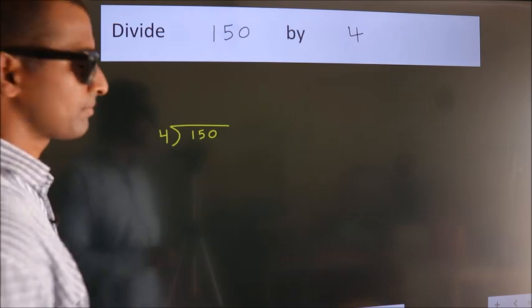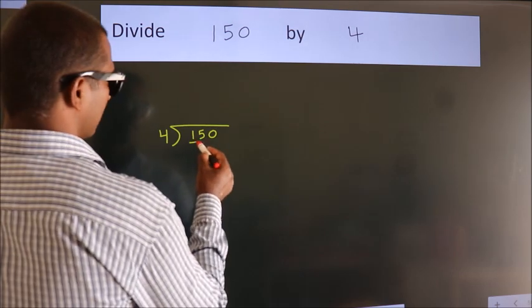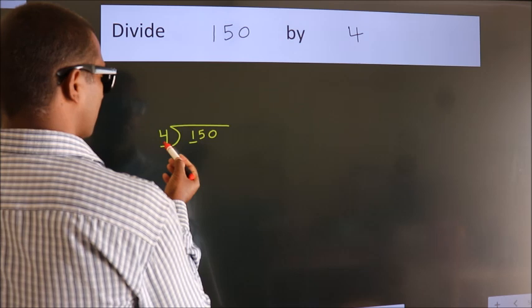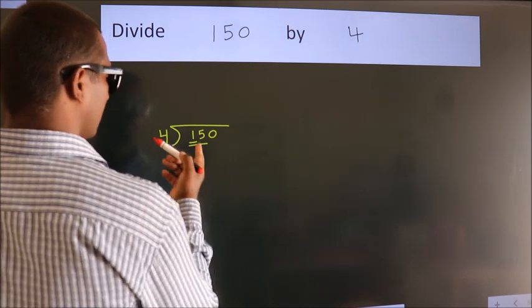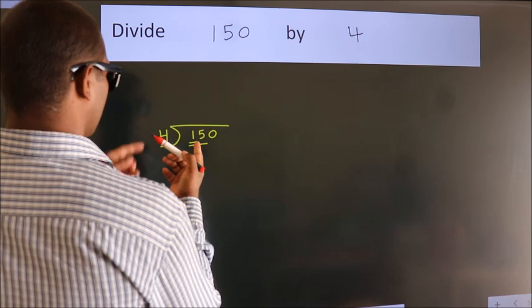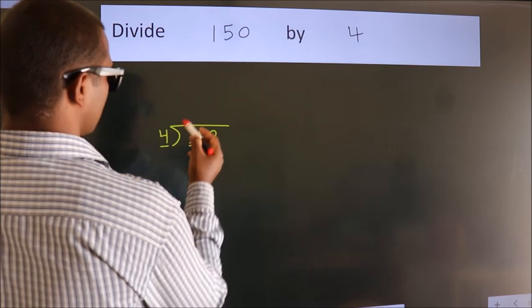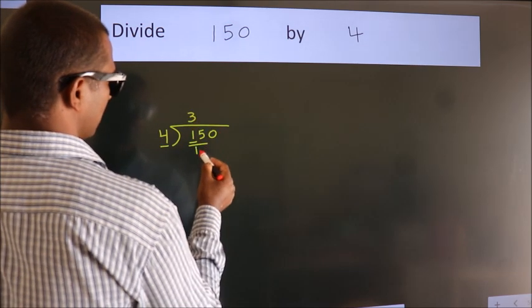Next. Here we have 1, here 4. 1 is smaller than 4. So we should take 2 numbers, 15. A number close to 15 in the 4 table is 4 times 3, which is 12.